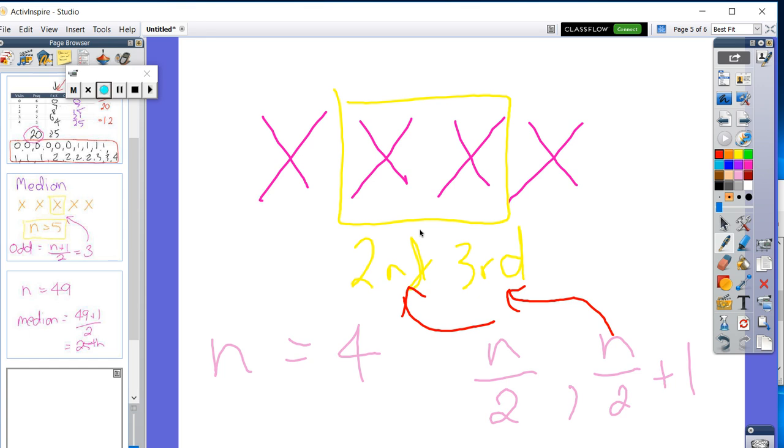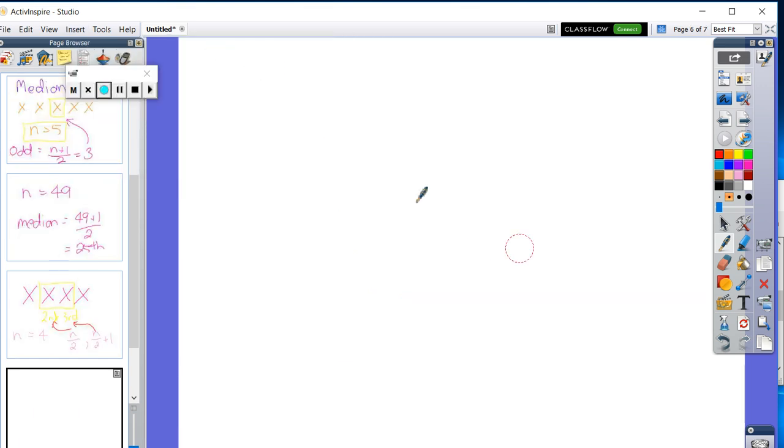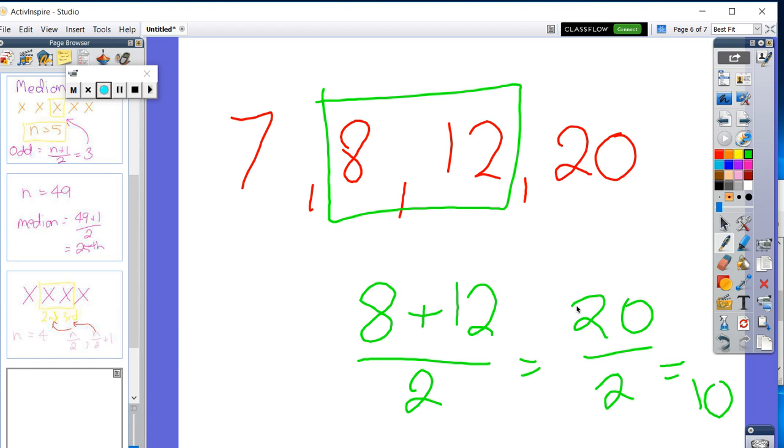Now, once you've got the second and third, you've got to add them together. So, if I just do an example of that. So, let's say I've got seven, eight, twelve, twenty. These two are the median. I need to add them together and divide it by two, which gives us the average. So, the median in this set of numbers is ten. Despite the fact there actually isn't a ten in the set. Because that's in the middle of these two.